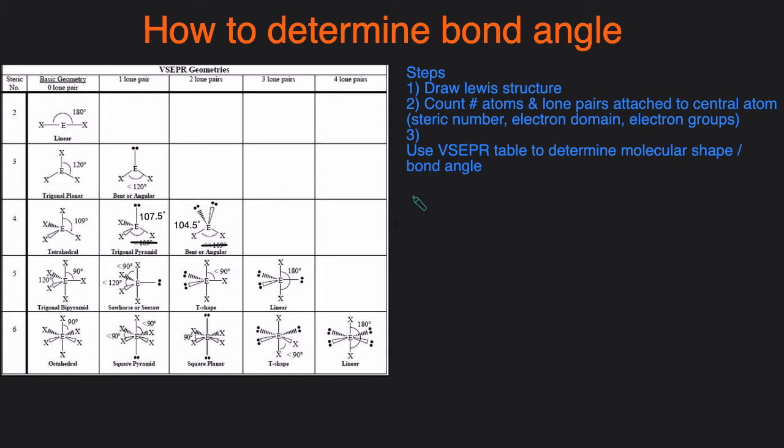Alright, let's start with an example that you'll probably see, H2O. The first step is if you don't have the Lewis structure to draw the Lewis structure. If you're having trouble drawing Lewis structures I'll attach a video in the description below where I go over in detail how to draw that, but just to save time I'm gonna pre-draw the Lewis structure here and it looks like this.